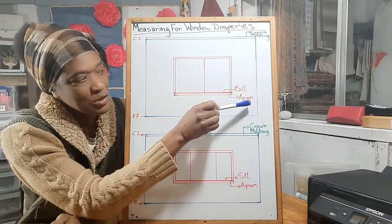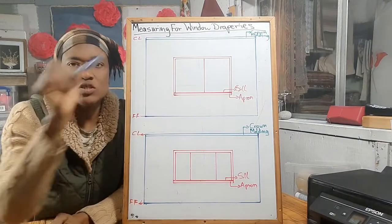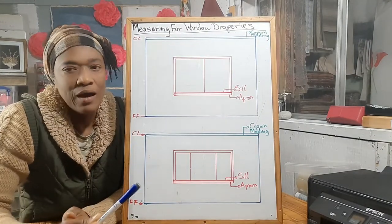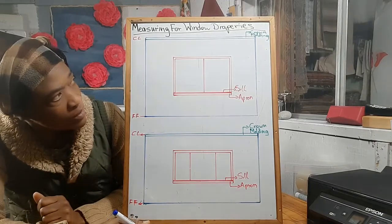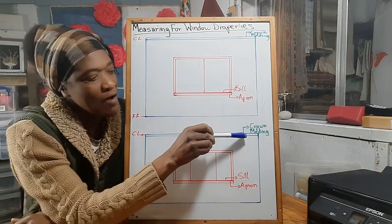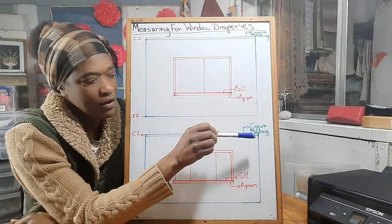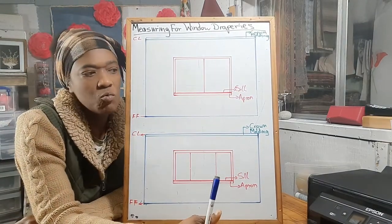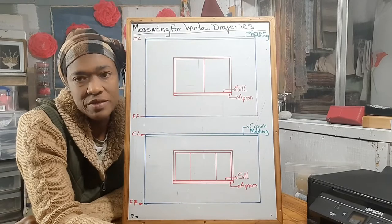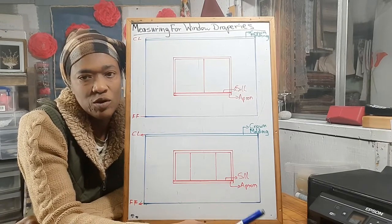Your sill is the top part of your window framing, and your apron is the bottom part that's just under the sill and against the wall. I also have crown molding on the diagram, and we will have to deal with the crown molding when we do the measurement for the length.